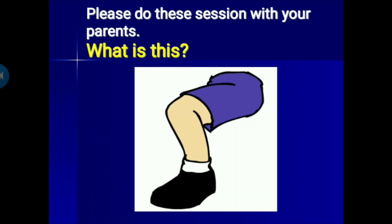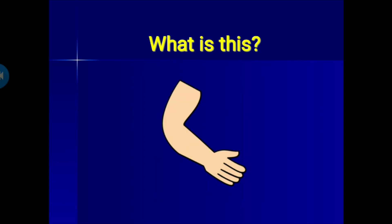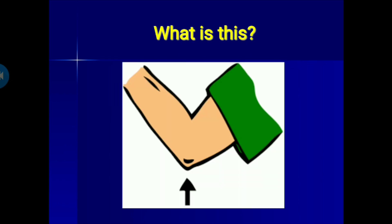Great job, kids! Now please do this session with your parents. I have a picture here — can you guess what it is? Yes, you are right, this is a leg. What about this? Good job, this is the head. What is this? Excellent! Yes, this is an arm. What about this? Great job, this is the elbow.